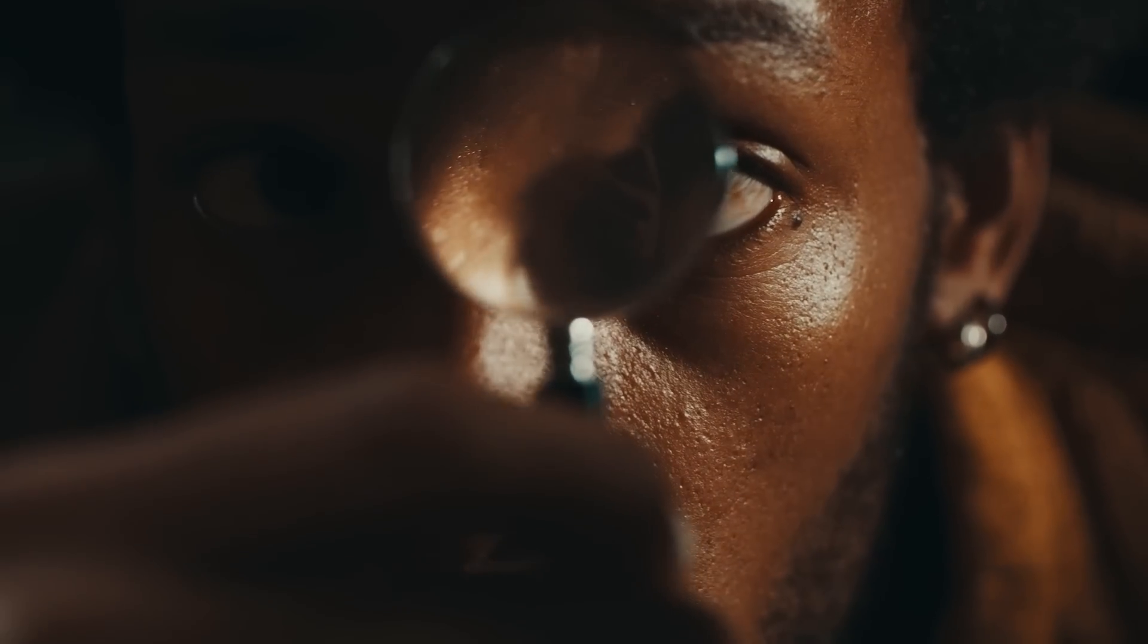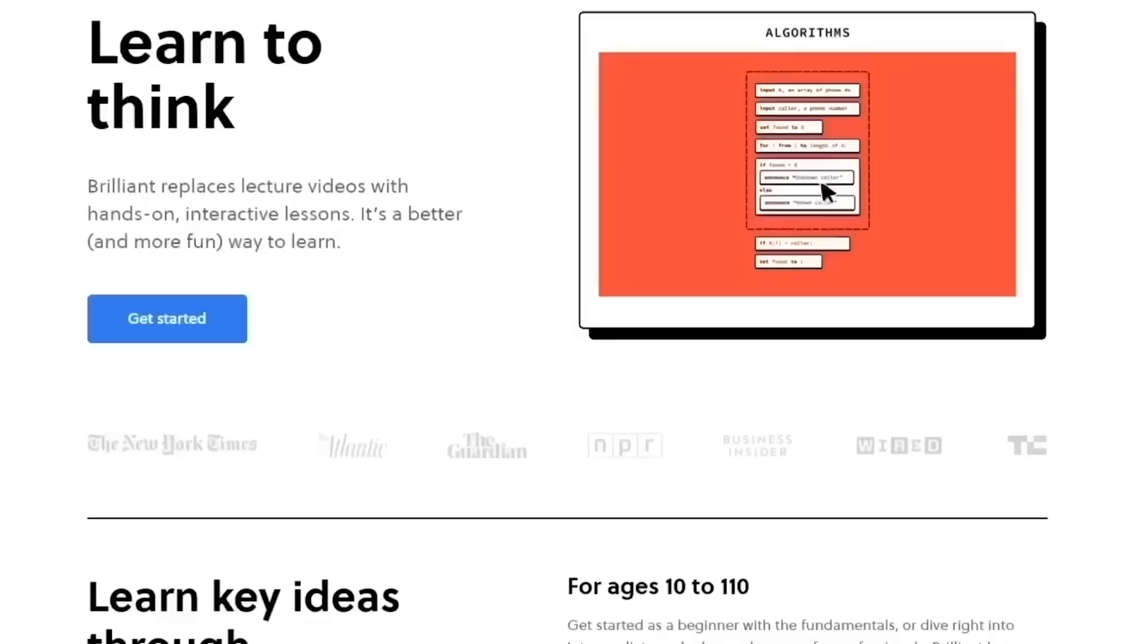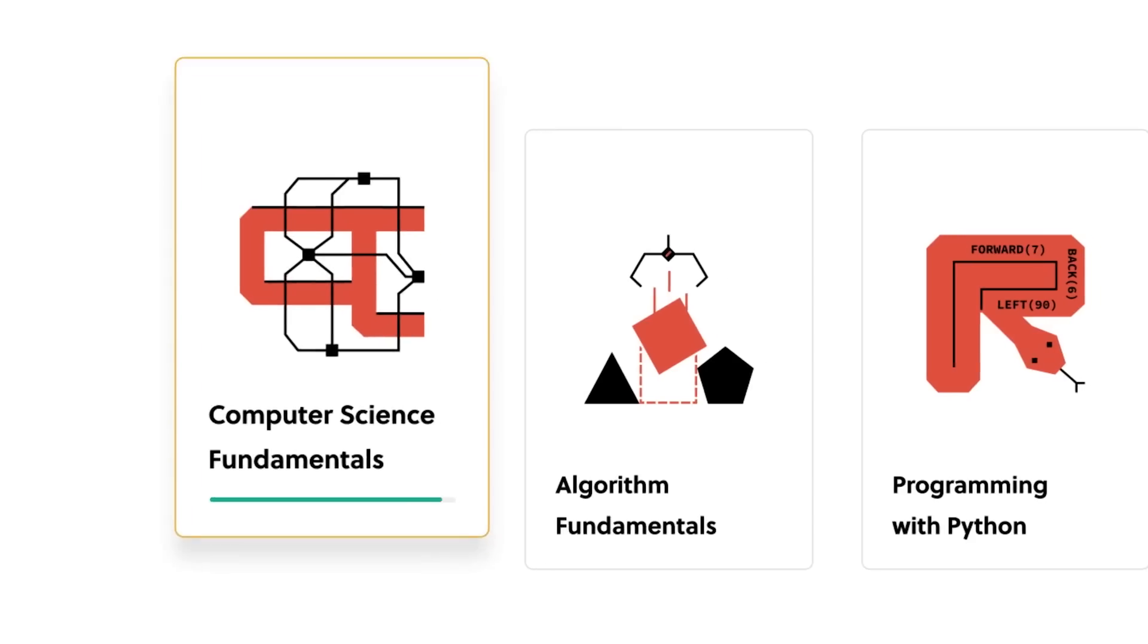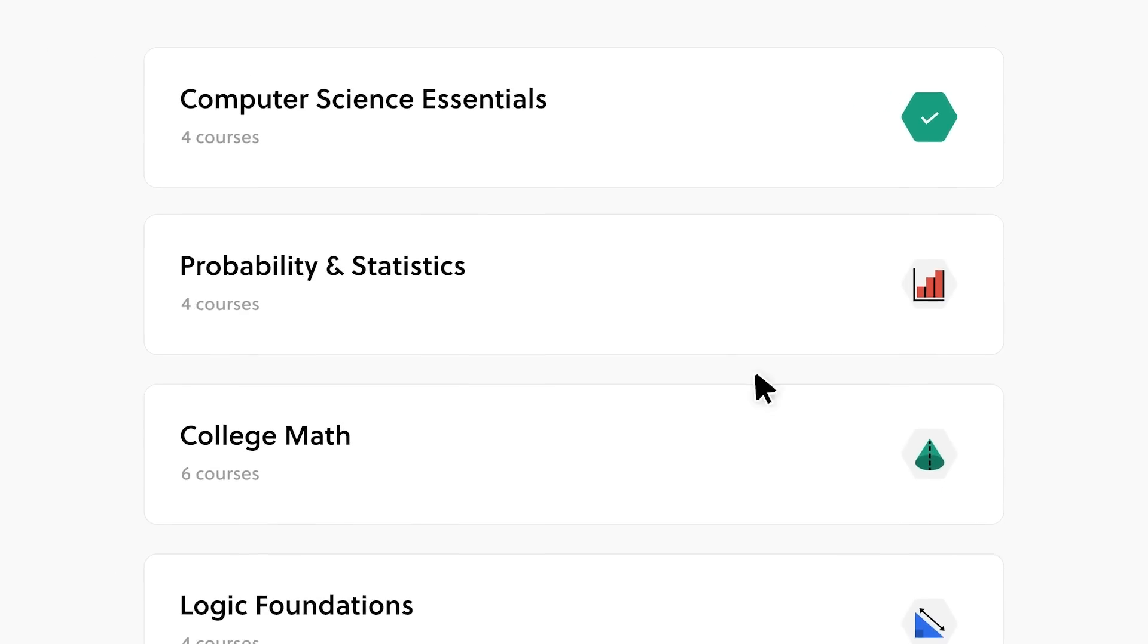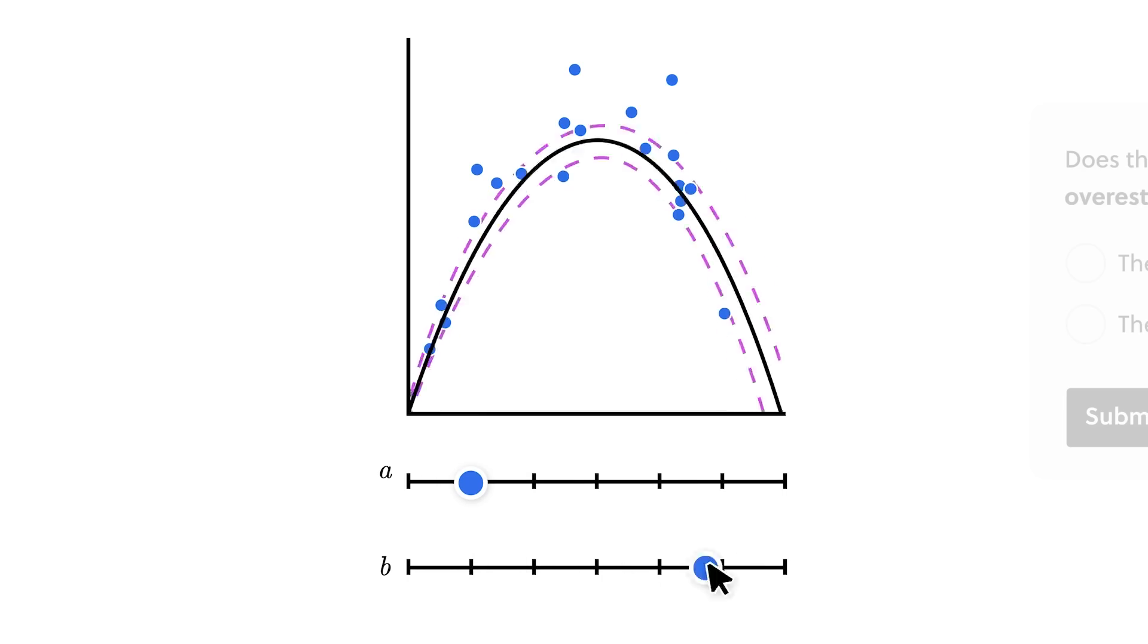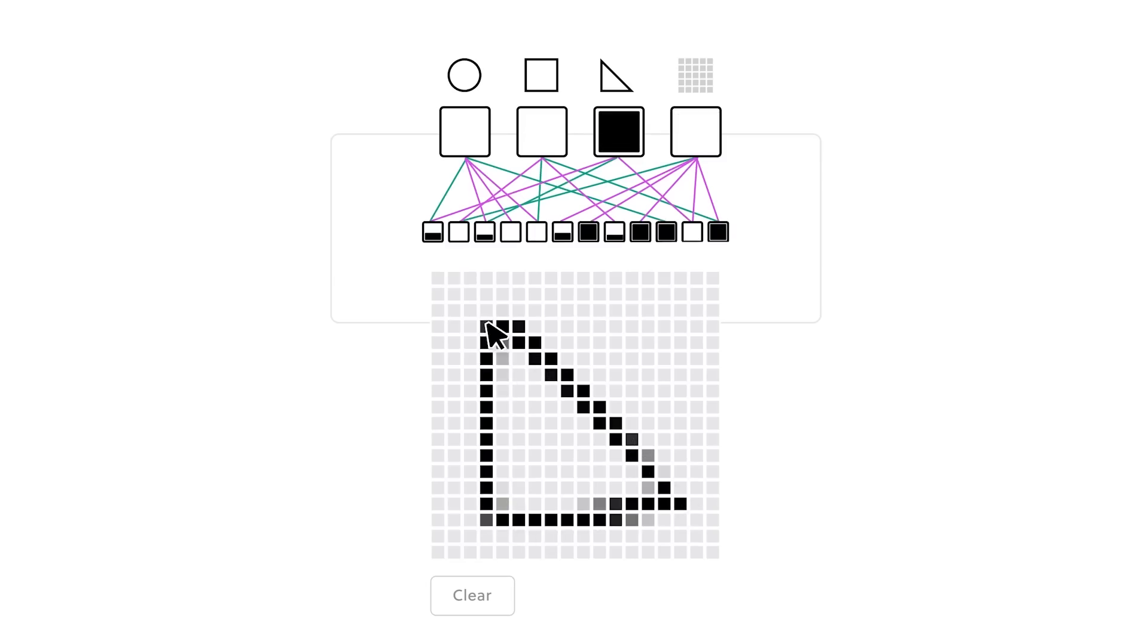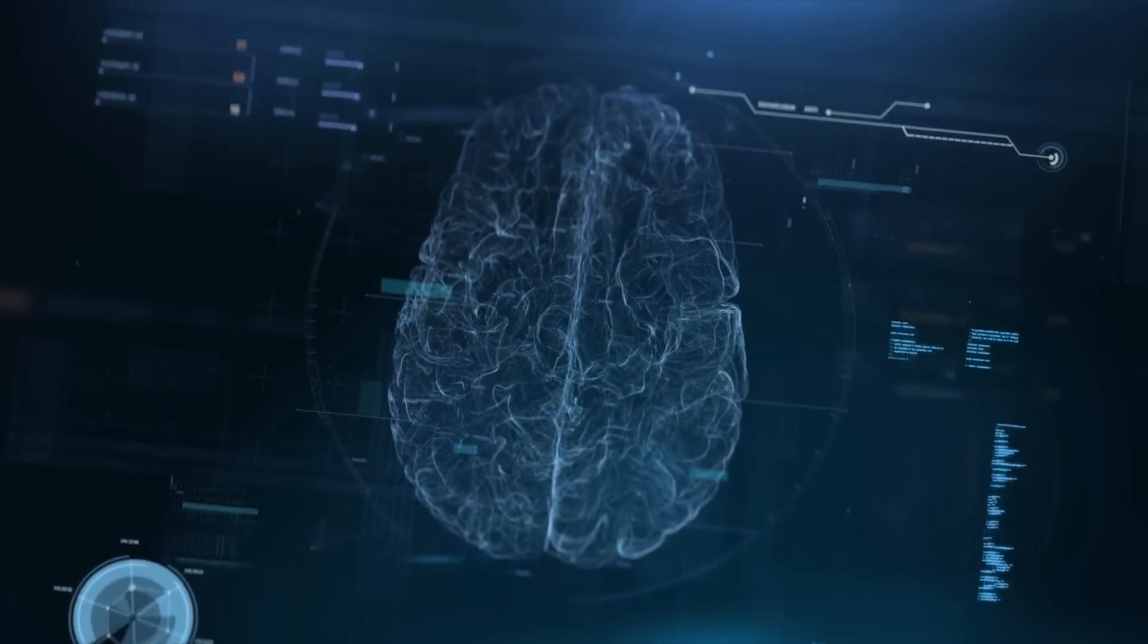Understanding the science behind how our universe works can be really challenging, but with Brilliant.org, the sponsor of today's video, it doesn't have to be. Whether it's physics, math, or computer science, Brilliant offers thousands of lessons that are broken down into bite-sized pieces, and are taught interactively. That way you're not lost in all the theory of these mechanisms, but can actually understand how they work in the real world.